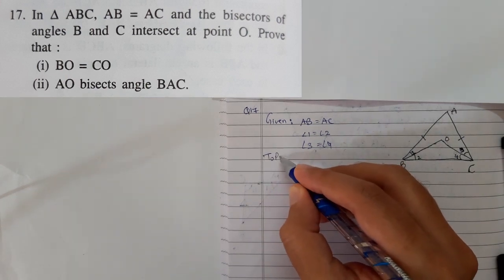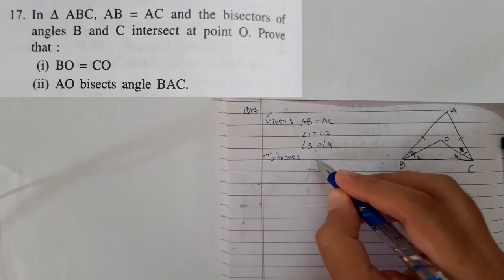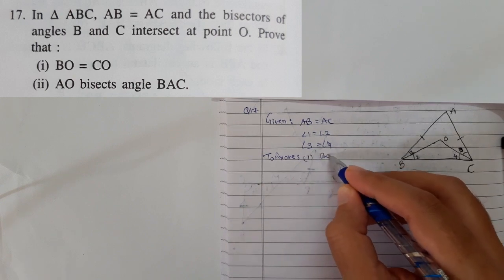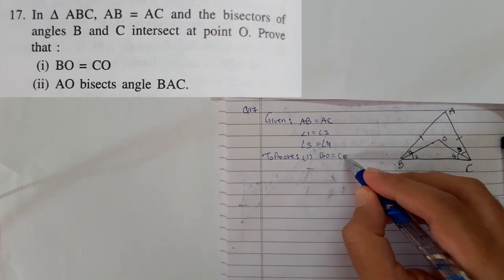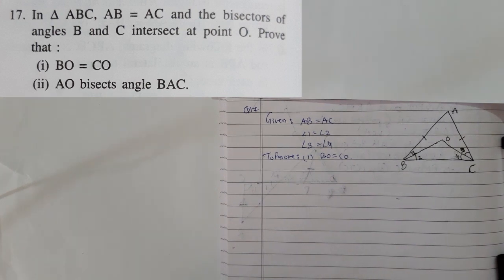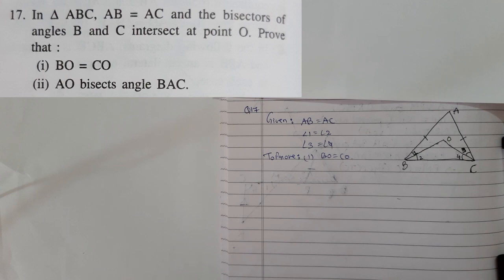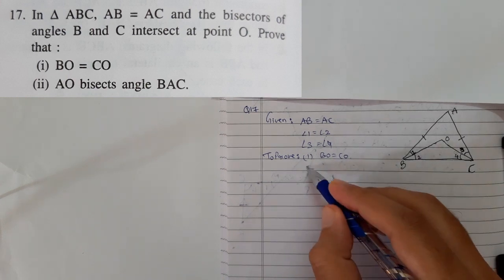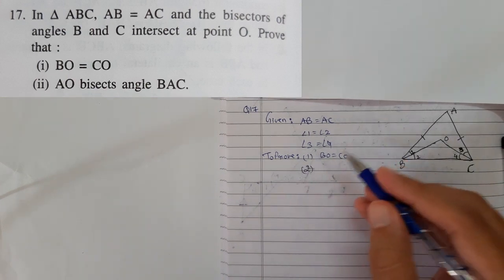Let me tell you one thing. Unless and until we don't prove the first part, we are not in a position to prove the second thing. Congruency is like this. If you are not able to do the first part, chances are that you won't be able to do the second part.